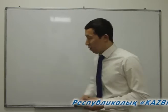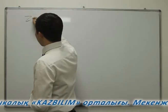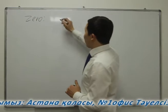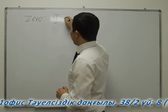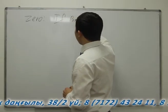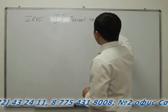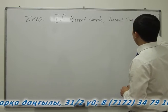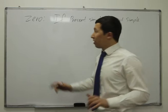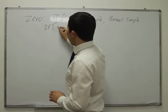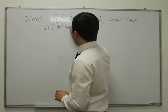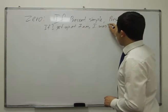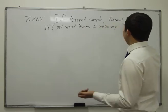Let's do it well. First, zero conditionals. I will explain the formulas. The zero conditional formula is: if + present simple, then the second part is present simple too. For example: if I get up at 7 a.m., I wash my face.